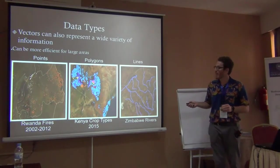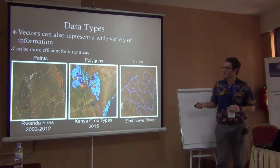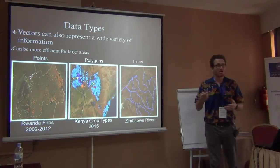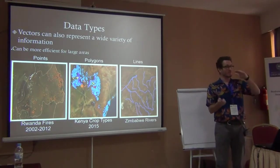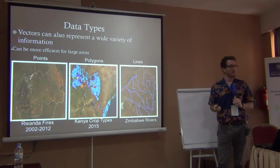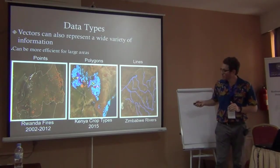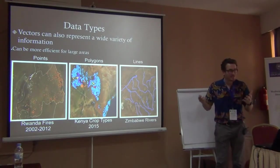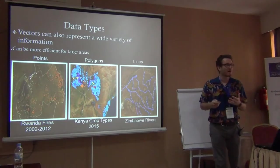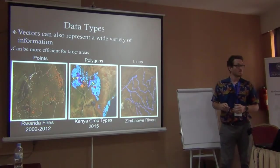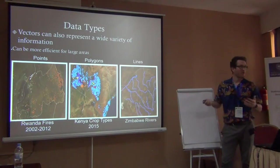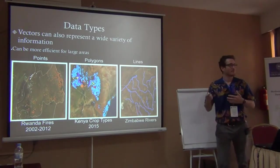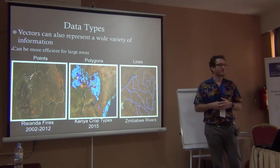Here we can show Kenyan grasslands in what's called polygons — a polygon is a shape, a multiple-sided shape. Each one of these shapes represents something different about Kenyan croplands. Each color represents a different crop, or a different type of irrigation.